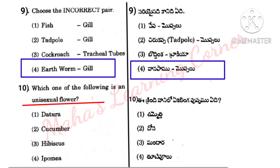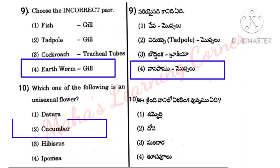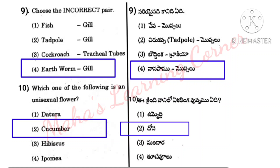Question: Which one of the following is a unisexual flower? 'Uni' means single — either male or female reproductive parts only. Options: Datura, Cucumber, Hibiscus, Ipomoea. Correct answer: Option 2, Cucumber. Cucumber has unisexual flowers; the remaining three — Datura, Hibiscus, Ipomoea — have bisexual flowers, meaning both male and female reproductive parts are present. Next question: which is a unisexual flower among: Ummetta, Dosa, Mandar, Tuti polu? Correct answer: Option 2, Dosa.